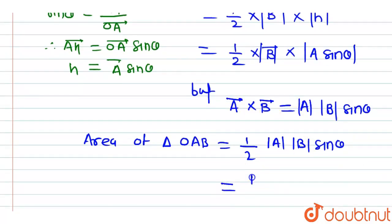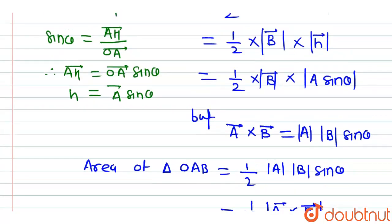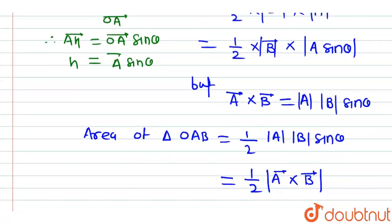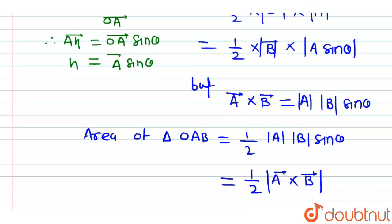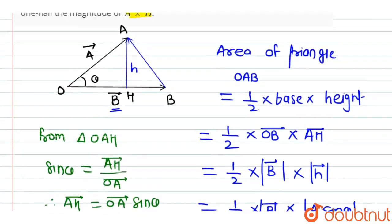So this value can also be written as one-half mod of A bar cross B bar. So area of triangle will be equal to half the magnitude of cross product of A bar cross B bar. This is the proof of our question. Thank you.